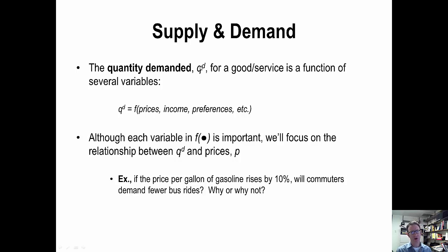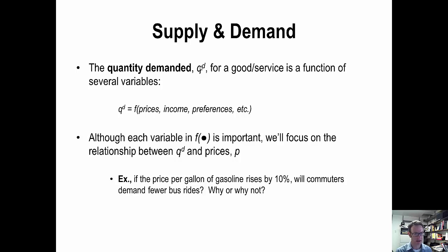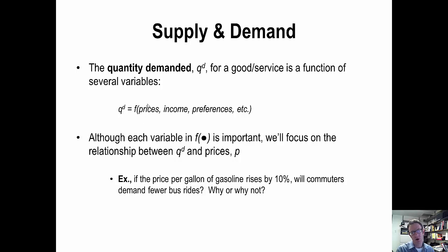Quantity demanded for a good or service — for example, tomatoes measured in pounds or gasoline measured in gallons — is a function of lots of different variables, with price per unit being maybe the most important. Price per unit means that if we're measuring quantity demanded in pounds of tomatoes, we're measuring price per pound; if in gallons of gasoline, price per gallon.